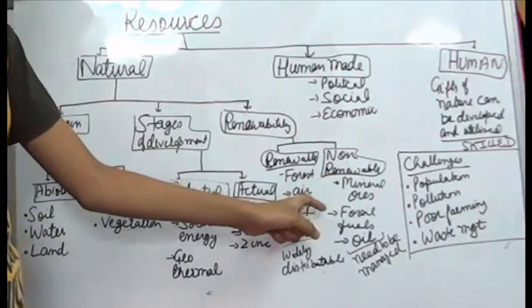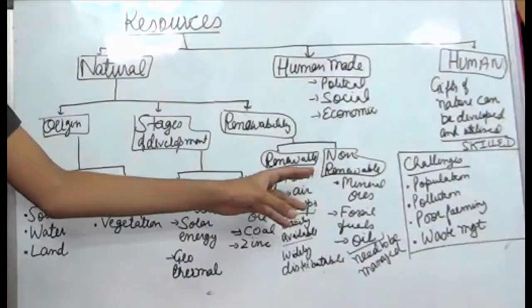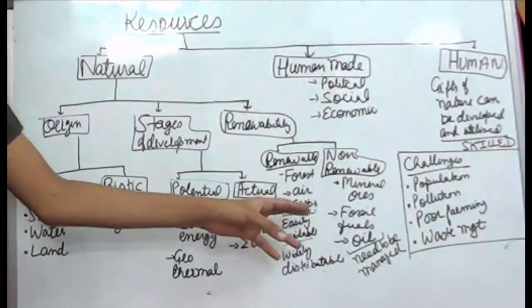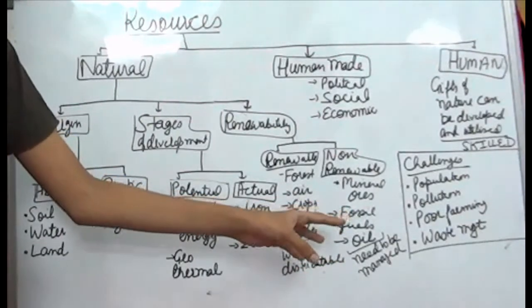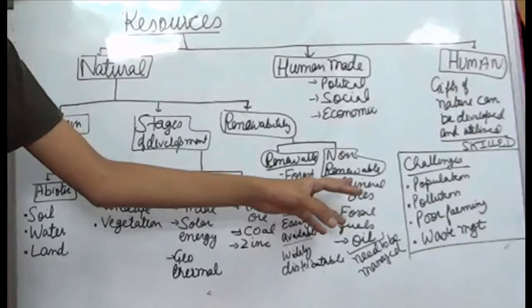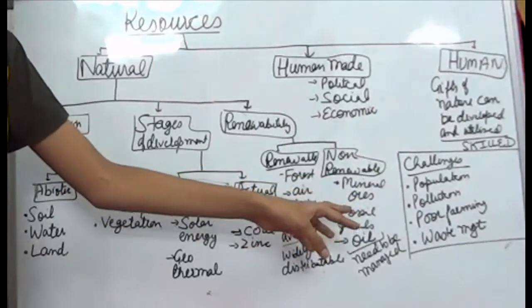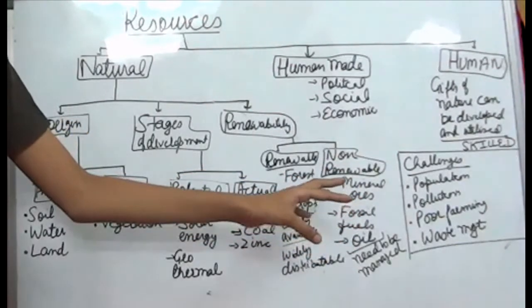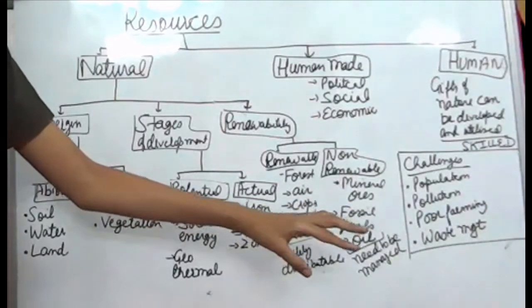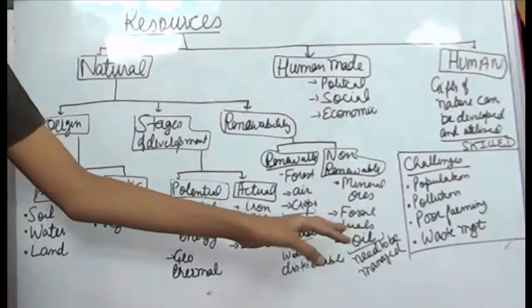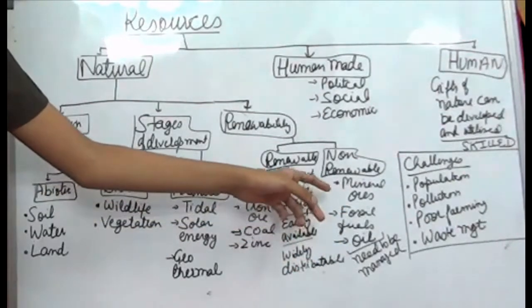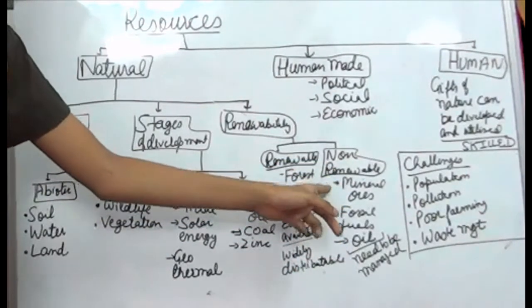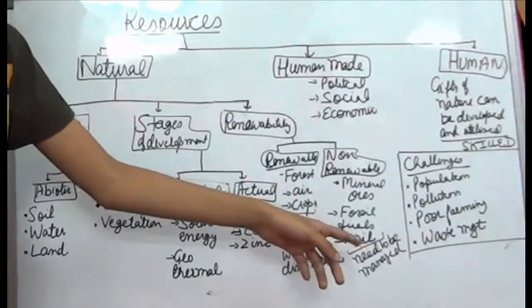Non-renewable resources have to be managed properly so they do not end in a particular period of time. It takes a lot of time to renew these sources, so once these sources end, the human race will no longer be able to renew them over a short period of time. Examples are mineral ores, fossil fuels, oil, etc.